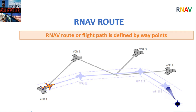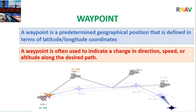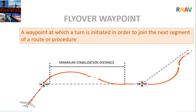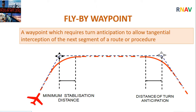With area navigation, aircraft can fly direct routes between any two waypoints. Waypoints are imaginary points in space with a specified geographical position in terms of latitude and longitude. A flyover waypoint is one at which a turn is initiated to join the next segment of a route or procedure; the minimum distance after the turn to re-join the track is known as the minimum stabilization distance. A flyby waypoint requires turn anticipation to allow tangential interception of the next segment, so the aircraft commences the turn before reaching the waypoint.